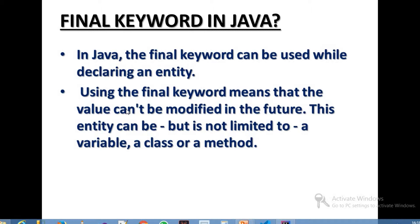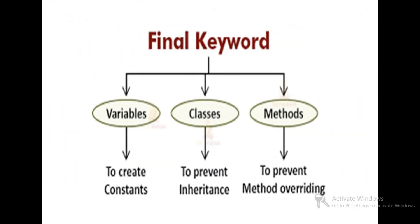If we declare a variable, a method, or a class with the final keyword, we declare an entity that is constant in the future. We can use the final keyword for variables, classes, and methods. For variables, we use it to create a constant. For example, if we declare and initialize a value of 5, that value is constant.